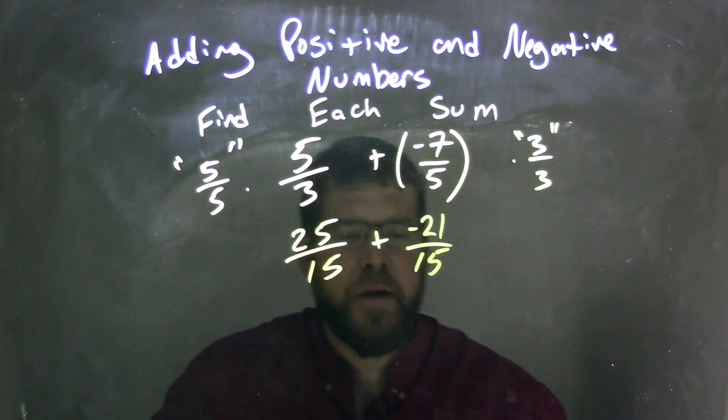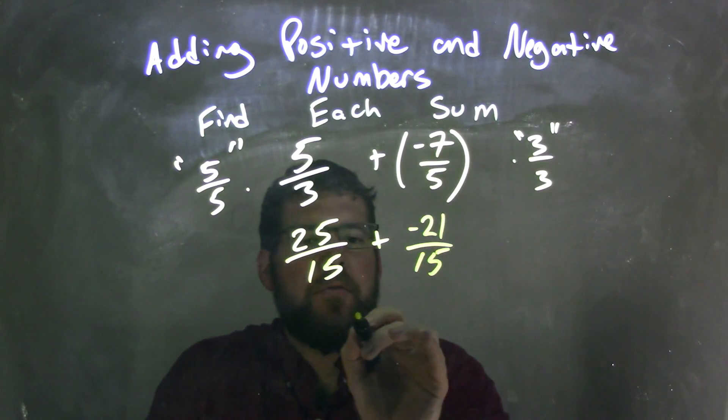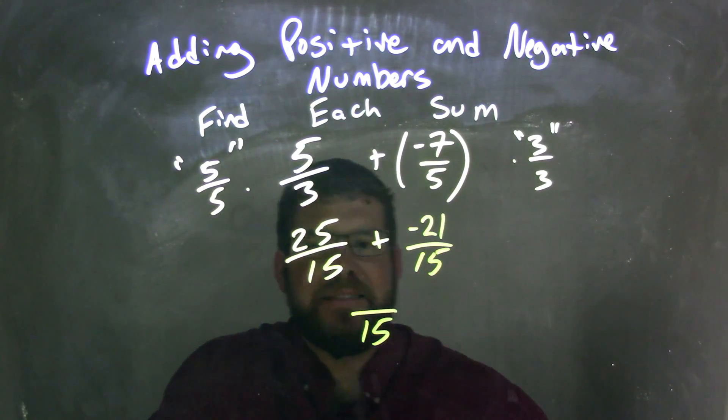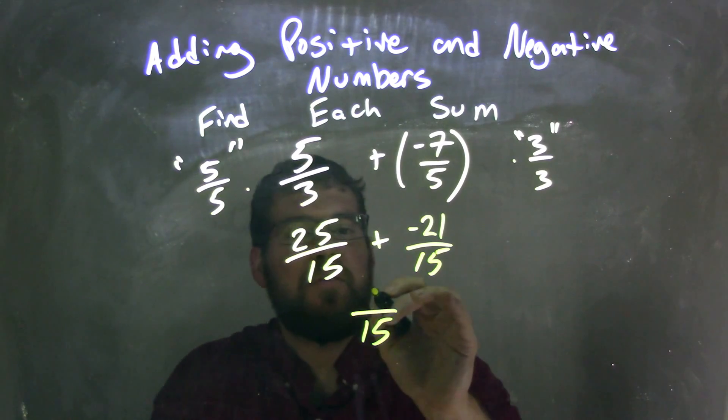Now that we have a common denominator, we can add these two fractions. When we add fractions, the denominator stays the same and we add across the numerator. 25 plus a negative 21, or subtracting 21, is just 4.